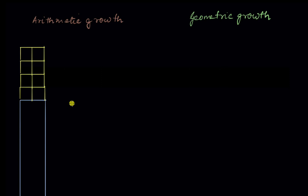In geometric growth it's a little bit different. We can see this with bacteria as well as plants, so let's look at bacteria. Let's say we start with two bacteria. In geometric growth, both cells will divide, and each cell divides to form two cells. So each of the cells gives rise to two more cells — two cells are added. Initially we had two cells, and then two cells give rise to four cells, so each time the number of cells doubles.